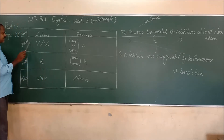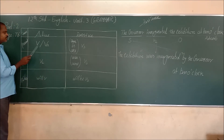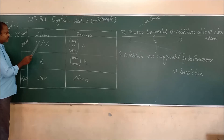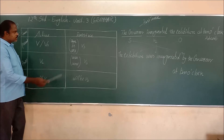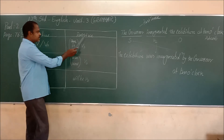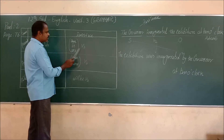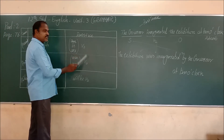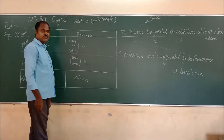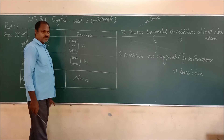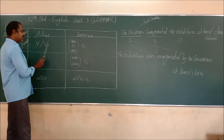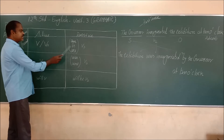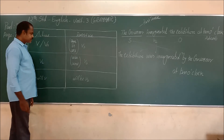For a sentence in simple present tense, the verb will be V1 or V1+s — for example, 'write' or 'writes'. The passive condition is: am/is/are + V3, where V3 means past participle, the third form of the verb. For example, 'writes' becomes 'is written'.